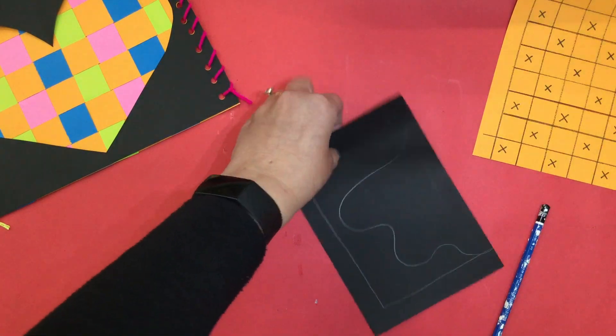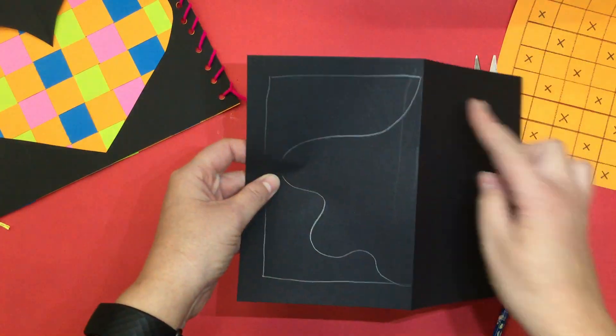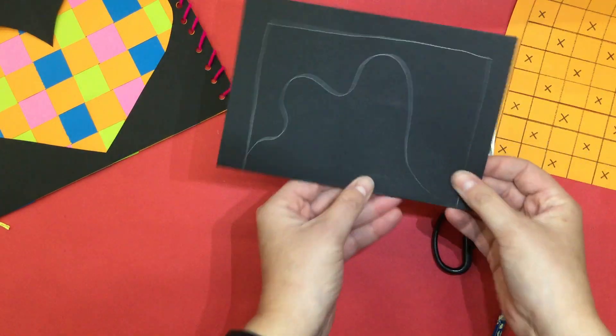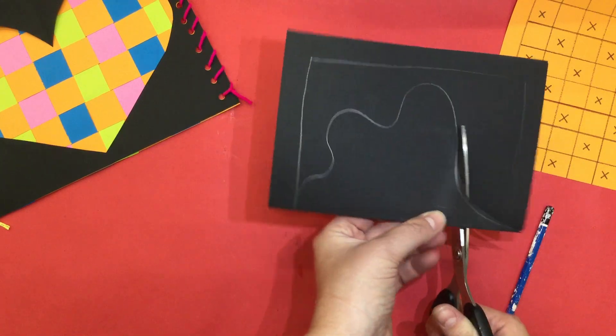Then once you've drawn your shape, first double check that you're starting to cut on the folded edge of your black paper. Yep, that's right. And then you can go ahead and cut your shape.